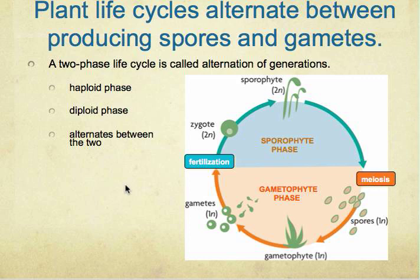There are two phases of the life cycle called alternation of generations. The first one is the haploid stage, the second one is the diploid stage, and the third concept is that it alternates between the two. I've demonstrated this idea using a diagram to make things clear. If you just focus on the topic and apply the idea to the diagram, you'll understand what it's telling you.